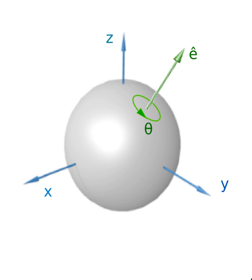But in mechanics and, more generally, in physics, this concept is frequently understood as a coordinate transformation — importantly, a transformation of an orthonormal basis — because for any motion of a body there is an inverse transformation which, if applied to the frame of reference, results in the body being at the same coordinates.